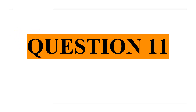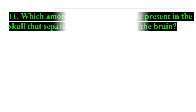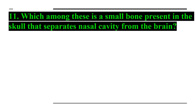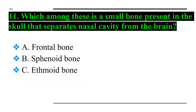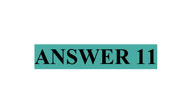Question number eleven: which among these is a small bone present in the skull that separates the nasal cavity from the brain? Option A: frontal bone, Option B: sphenoid bone, Option C: ethmoid bone, and Option D: zygomatic bone. Answer number eleven: Option C — ethmoid bone.